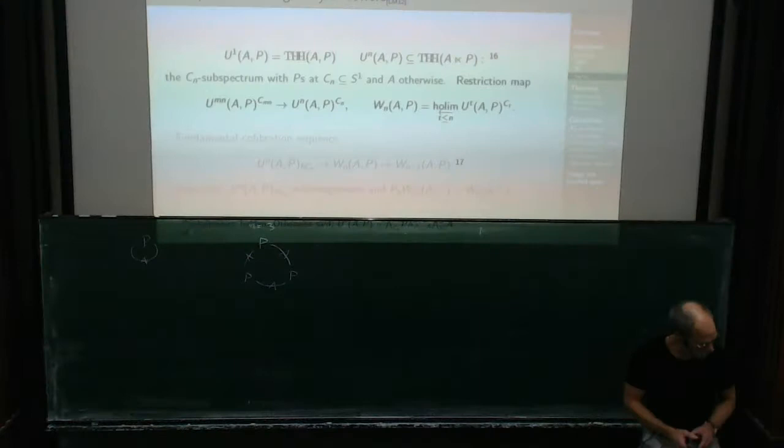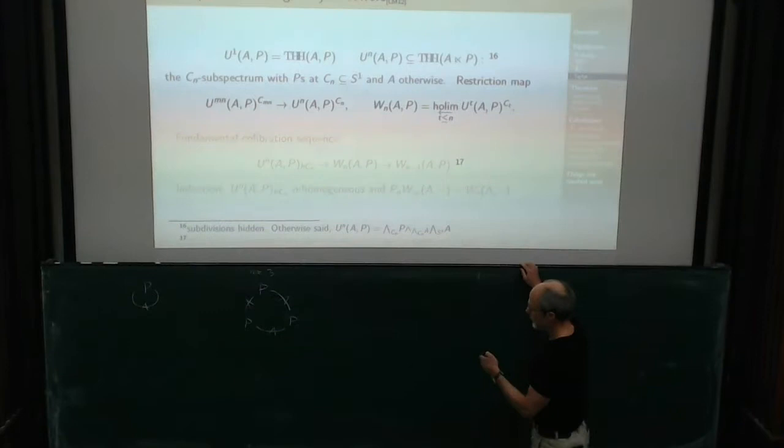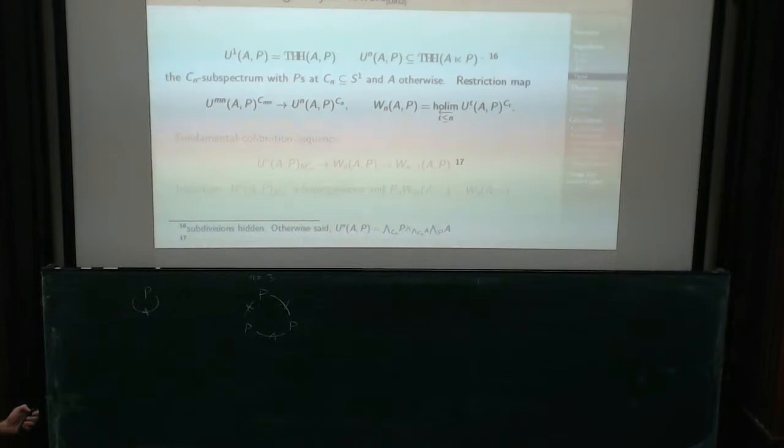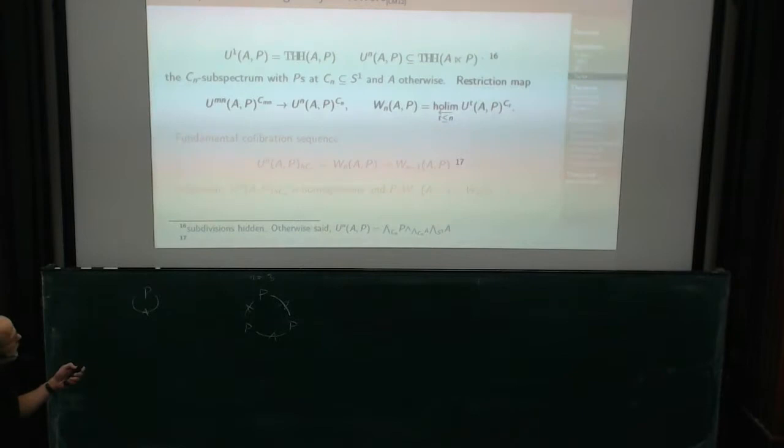That's essentially what I've defined here with U_N when N is equal to 3. The restriction map: so if A is equal to P, this is nothing but THH itself. So this is just a bunch of copies of THH itself. And just like we had restriction maps before, we have restriction maps now, and it goes by division here.